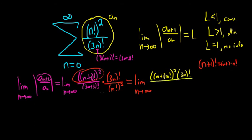On the bottom, we have this 3n plus 3 factorial. We can write that as 3n plus 3. Then the term before that would be 3n plus 2. You just subtract 1. The term before that would be 3n plus 1. And then the term before that is 3n, and then 3n minus 1, and so on. So the rest of it is 3n factorial.